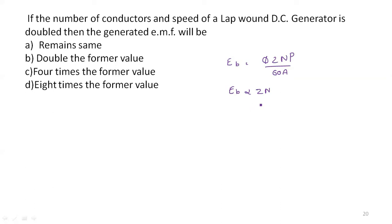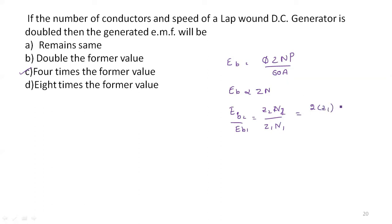Since Z is doubled and speed is doubled, that is 2 times times 2 times, the back EMF becomes 4 times. We can also verify: Eb2 divided by Eb1 equals Z2·N2 divided by Z1·N1. Z2 is 2 times Z1 and N2 is 2 times N1. The Z1 and N1 values cancel, giving 2 into 2 equals 4. Therefore Eb2 equals 4 times Eb1.